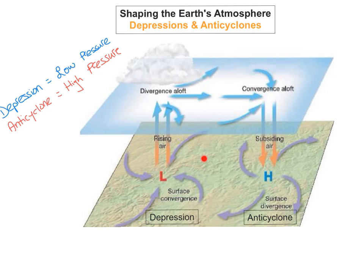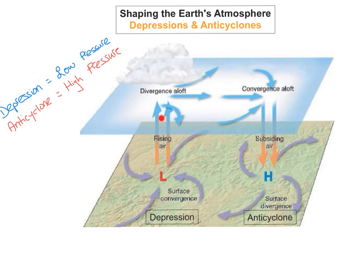The next one is a depression. A depression is an area of low pressure and what happens here is the warm air actually rises up. As the warm air rises up it cools very quickly, condenses, and usually cumulus clouds form. Winds tend to blow into low pressure areas because air moves from areas of high pressure to areas of low pressure. At depressions or areas of very low pressure, usually you get lots of clouds, windy and wet conditions.